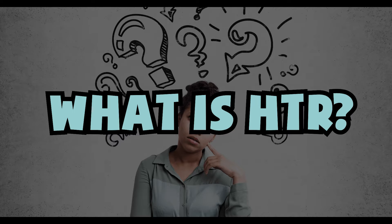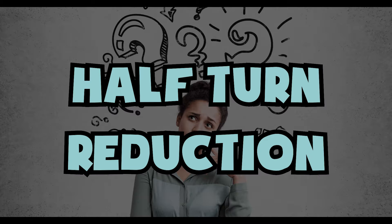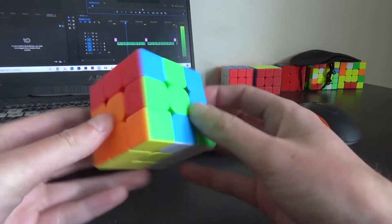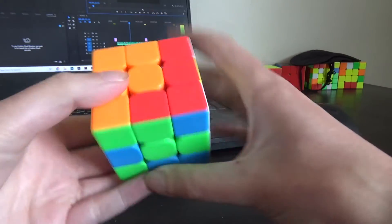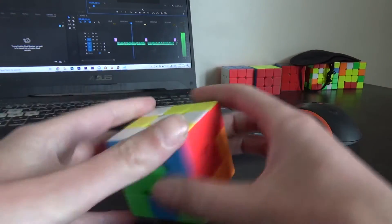So what is HTR? Well, HTR stands for half turn reduction and means the cube can be solved with only half turns. It looks like this with same and opposite colors on each face in relation to the centers.